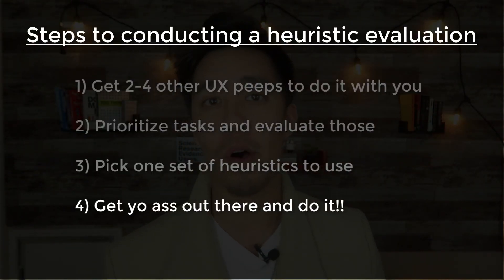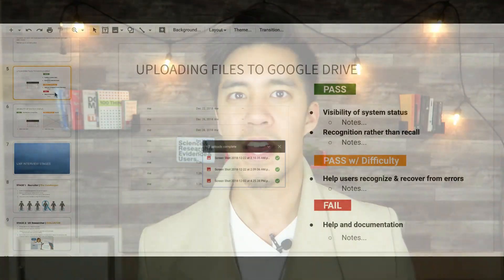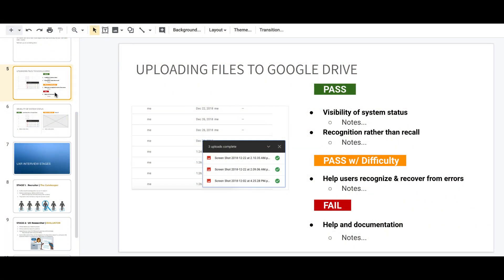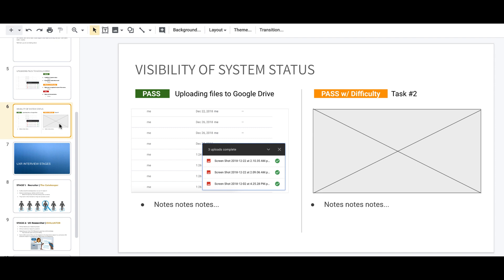Step four: go off and do it — individually. Spend an hour or two; you don't need to spend eight hours. Create a template that everybody would be using. I'm going to share my screen to show you what a template could look like — something I've used in the past. For example: uploading files to Google Drive is the task we're evaluating. On the left I have a screenshot; on the right I have pass, and underneath are the heuristics that do well. Then I have pass with difficulty — heuristics you can meet, but it's a little difficult. And finally at the bottom we have fail — heuristics that the system does not adhere to and violates. The second slide shows a different format: instead of having the task at the top, I have the heuristic at the top and then list the tasks underneath.